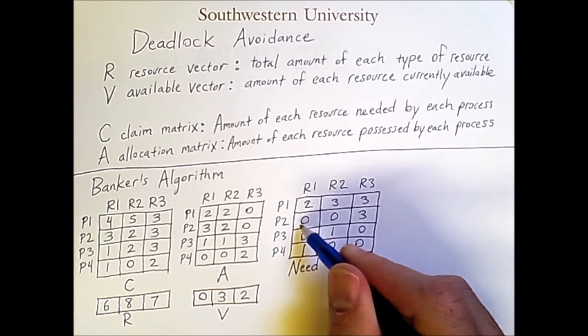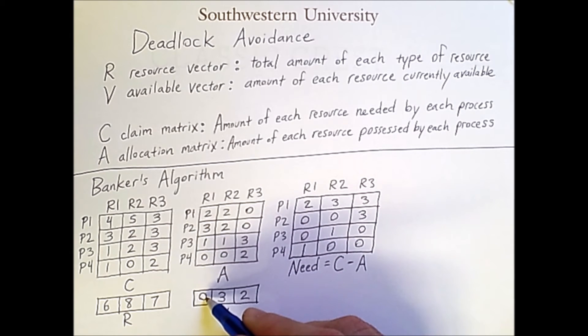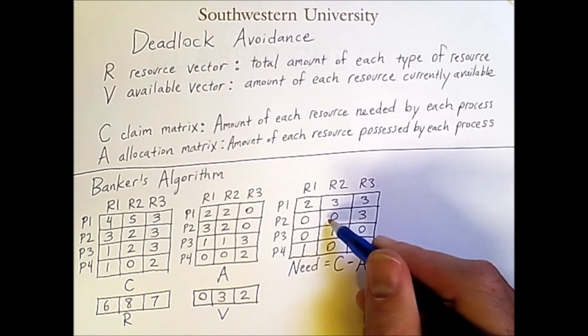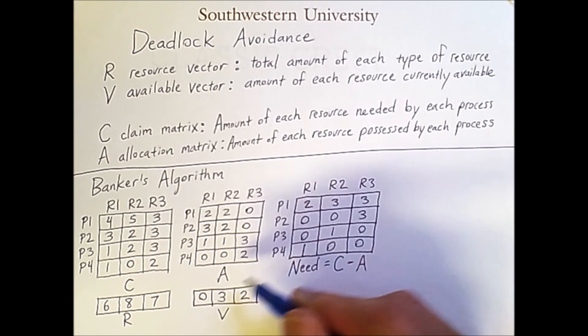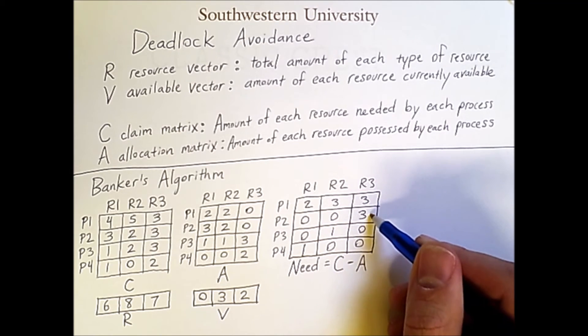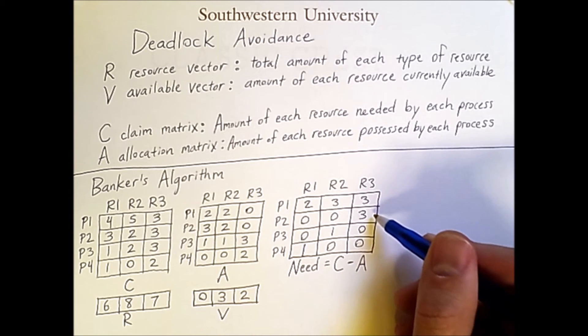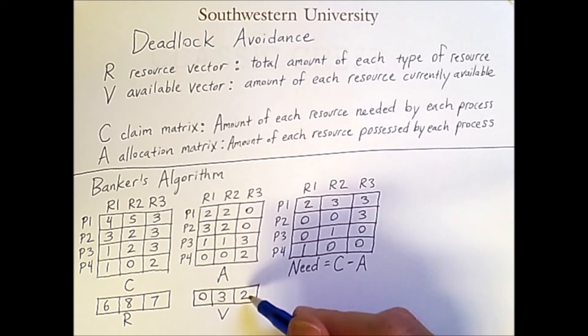So we're going to avoid that and consider other processes. Process 2 requires 0 units of resource 1, which is good because there's none available, and requires 0 units of resource 2, which is less than the 3 that are available, but it requires 3 units of resource type 3, and we do not have that many available. Therefore, it is not safe to run this process either, because when it attempts to claim that 3rd unit of resource type 3, it will block, potentially leading to deadlock.